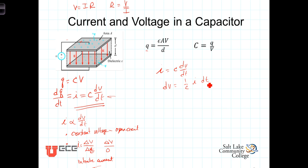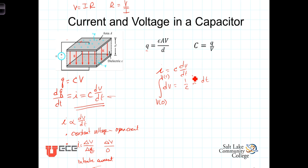Now we're going to integrate both sides. On the left-hand side we have a differential in voltage and on the right-hand side we have a differential in time. We're going to integrate — the limits of integration on the left go from the initial voltage up to the voltage at some time t, and on the right, since 1 over C is a constant we take it outside the integral, we integrate from 0 to t.